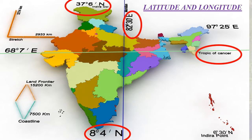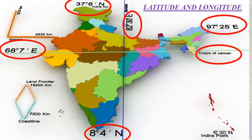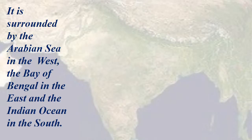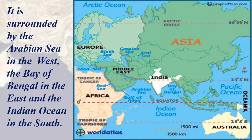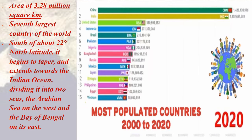Because of the vast east-west extent, there is a difference of two hours in the local time of Gujarat in the west and Arunachal Pradesh in the east. The Arabian Sea on the southwest, the Bay of Bengal in the southeast, and the Indian Ocean in the south are the water bodies surrounding India. Asia is the world's most populous continent with over 4.4 billion inhabitants, and approximately 1.35 billion of these reside in India.